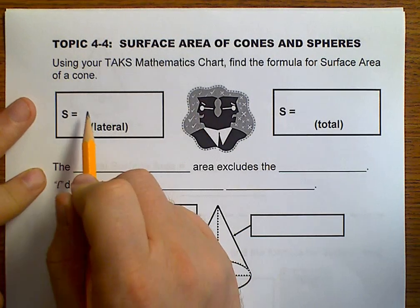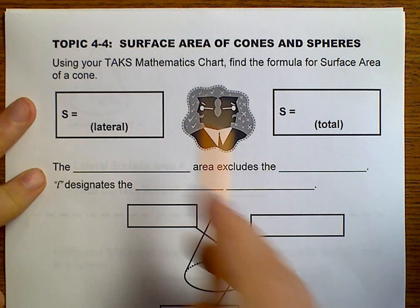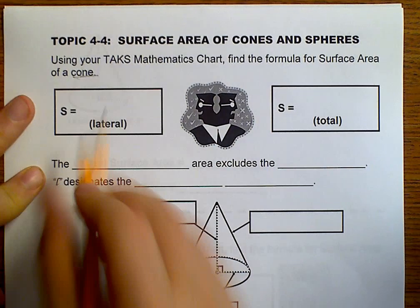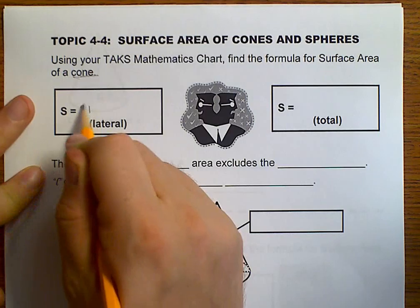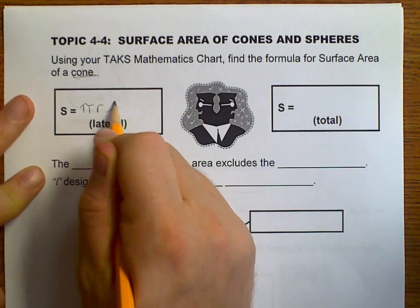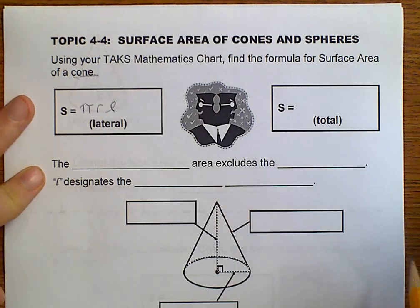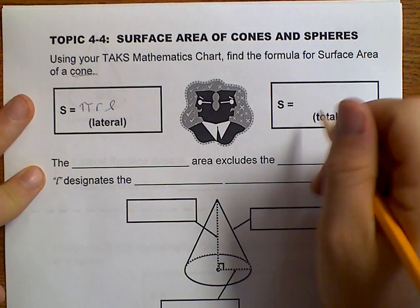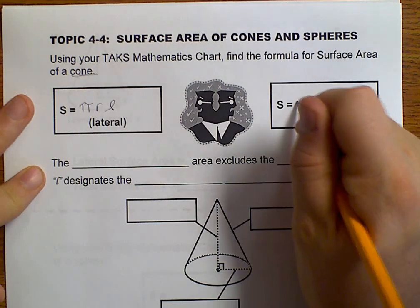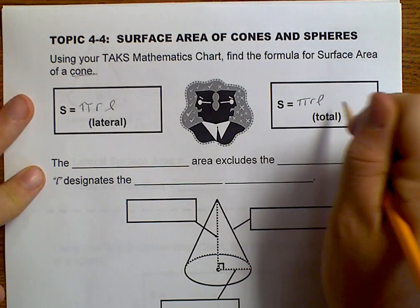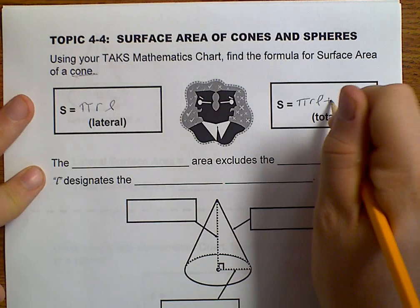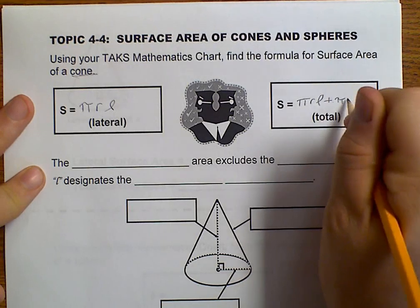For a cone, the lateral is pi times the radius times the slant height. And for the total surface area, we start with pi times the radius times the slant height, and we add pi r squared.